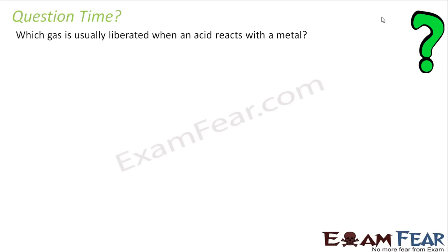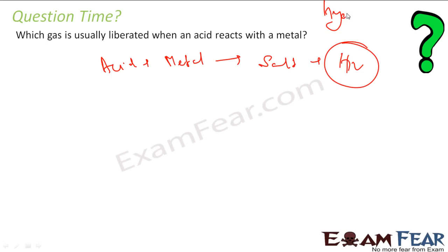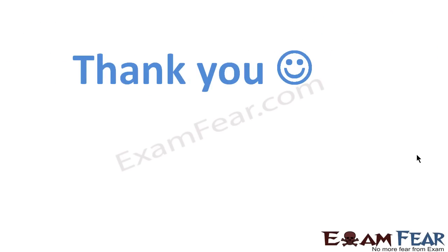Question: Which gas is usually liberated when acid reacts with metal? We know that acid plus metal gives salt plus hydrogen gas. So hydrogen gas is the gas which is liberated when acid reacts with metal.